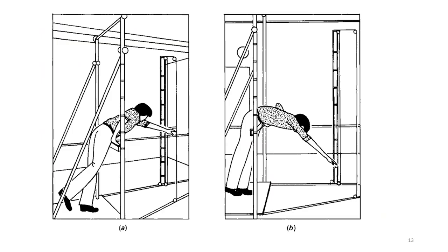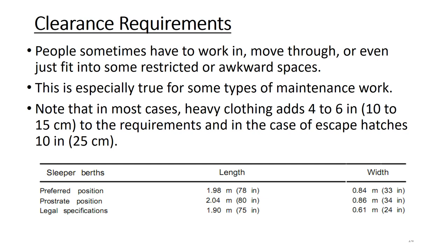A figure clearly depicts the importance of out-of-reach requirements. In figure A, a person is leaning to touch an object — this represents reach conditions for the extreme case. Figure B represents some kind of extension scenario. People sometimes have to walk in, move through, or fit into restricted or awkward spaces, which is especially true for some types of maintenance work.